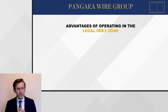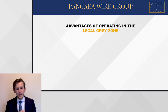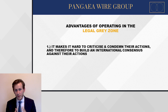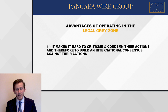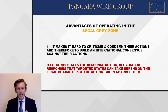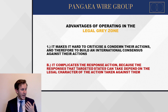There are gray zones in which nation states can operate, which are advantageous to them. There are different reasons why they would want to operate in these legal gray zones. The first is that it makes it harder to criticize and condemn their actions and more difficult to build international consensus against them. Because when one party says they overstep their boundaries legally, another party may say it's not clear, so we won't join in the condemnation. Secondly, it becomes increasingly difficult to respond, because the responses a targeted state can take depend on the legal character of the action taken against them.